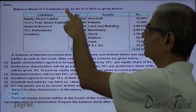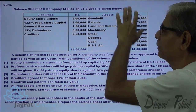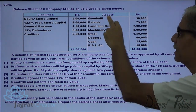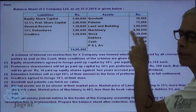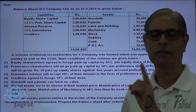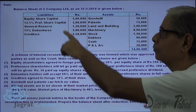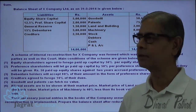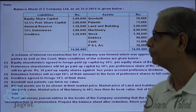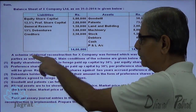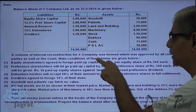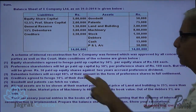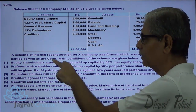The balance sheet of X Company Limited as on 31-3-2016 is given below. On the asset side, you are given: patent, land and building, machinery, stock, debtors, cash, and profit and loss account debit balance. On the liability side: equity share capital, preference share capital, general reserve, debentures, and creditors. A scheme of internal reconstruction for X Company was formed, which was approved by all concerned parties as well as the court.